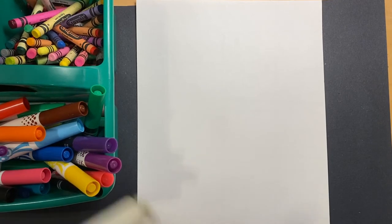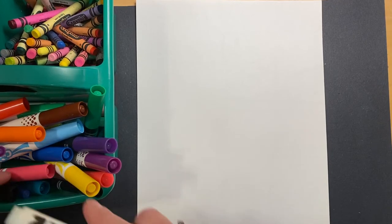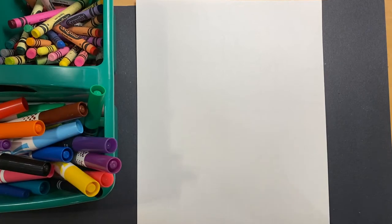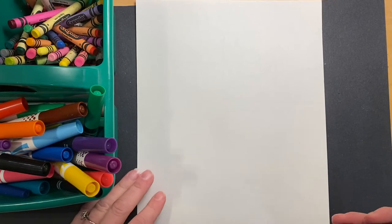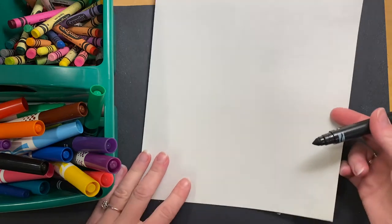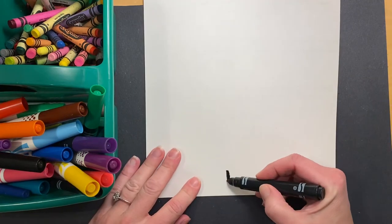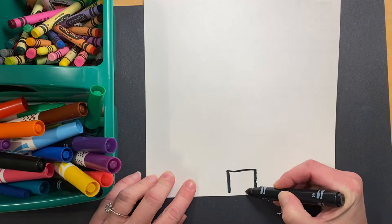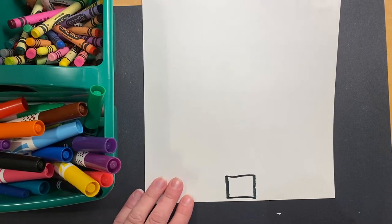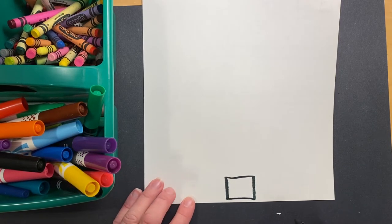Okay, my friends, time to be an artist like Vasily Kandinsky. Would you please start with a square towards the bottom of your paper? This is going to become our trunk of our tree.